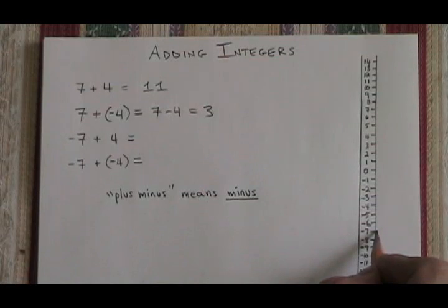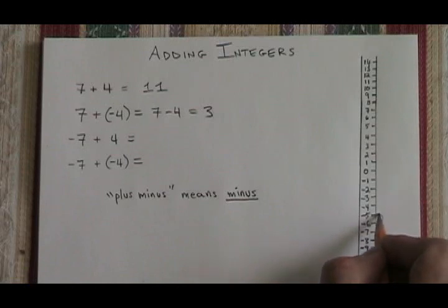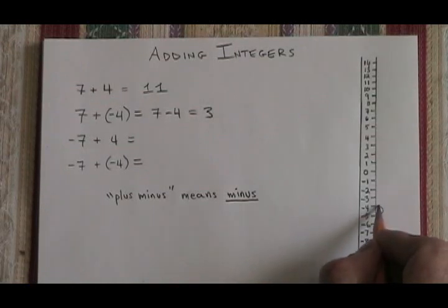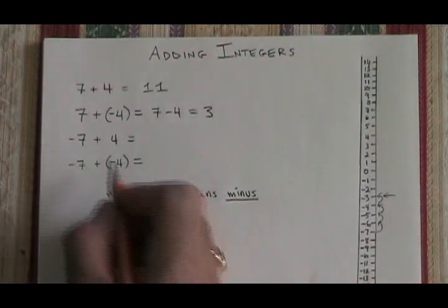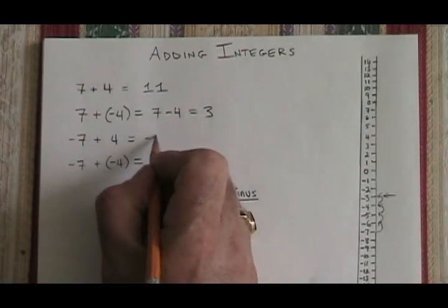And I add 4, which means I go up by 4. So let's just go up 4 times. And I get to negative 3. Negative 7 plus 4 equals negative 3.